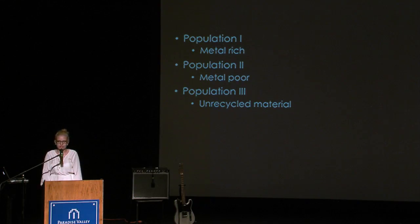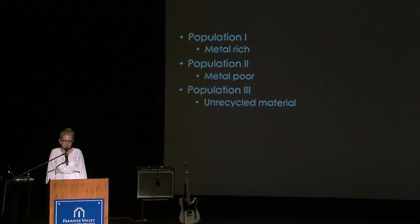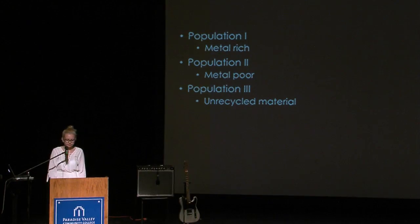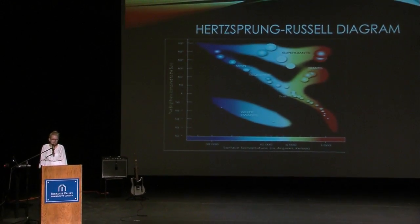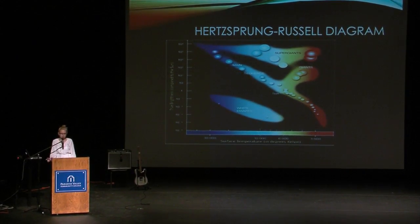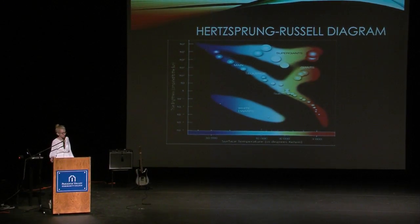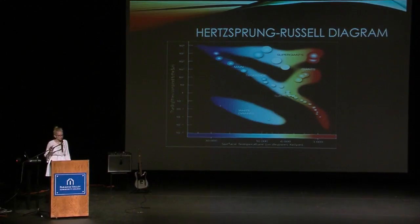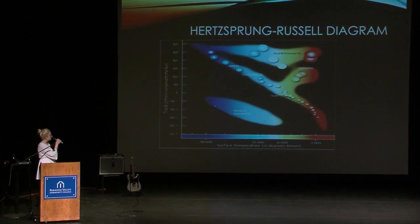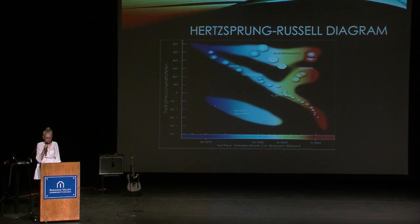Population 3 stars is a new class they defined because, with newer technology, they were finding stars made with elements and materials present from the Big Bang — completely unrecycled material. The HR diagram stands for Hertzsprung and Russell. It combines two diagrams: one classified using luminosity and the other used temperature. Together, the Hertzsprung-Russell diagram uses both luminosity and surface temperature to efficiently diagram stars, so you can tell if a star is in a normal stage of life or not.